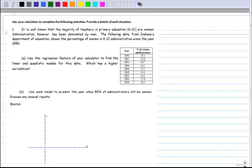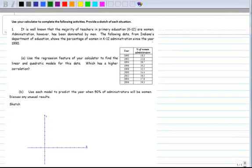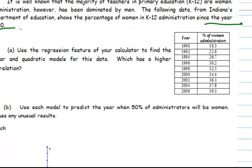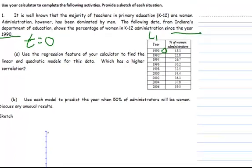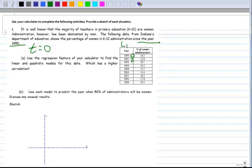So the first thing I notice when I look at this is it says right here, the year since 1990. So that means that 1990, T equals zero. So when I put these values into list one, I don't want to type in 1990, I want to type in zero. And for 1992, I want to type in two, and so forth and so on.